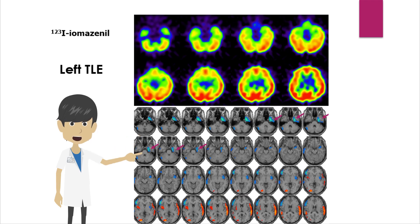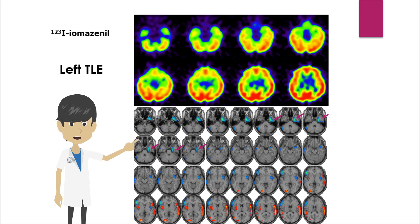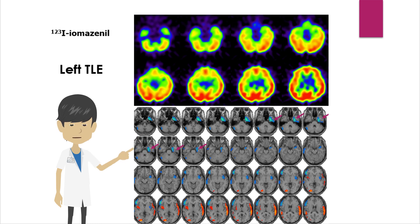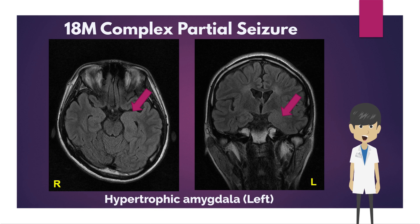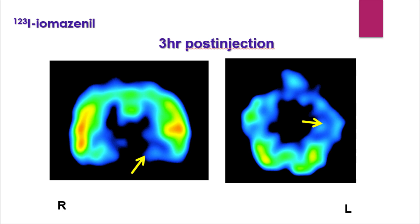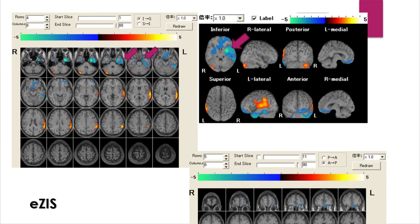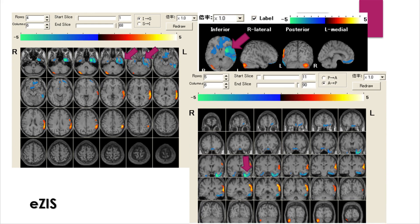This is an image of iodine-123 iomazenil SPECT in a case of left temporal lobe epilepsy, taken three hours after administration. Central-type benzodiazepine receptors are located in the cerebral cortex and the molecular layer of the cerebellar cortex. Statistical comparison with the normal database shows a decrease in receptors in the left medial temporal area. In a case of complex partial seizure with enlargement of the left amygdala, iodine-123 iomazenil SPECT shows a decrease in accumulation in the left medial temporal area, and statistical comparison reveals decreased receptors from the left medial and basal temporal areas.